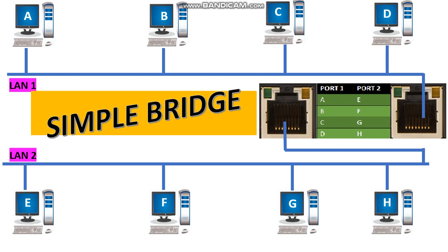If a new station is added, then the new station details must be entered into the table manually. If a station is removed, then the address of that station must be removed from the table manually. Simple bridge is the least expensive type of bridge. Even though simple bridge is inexpensive, the installation and maintenance of simple bridges are very time consuming and involve more trouble.